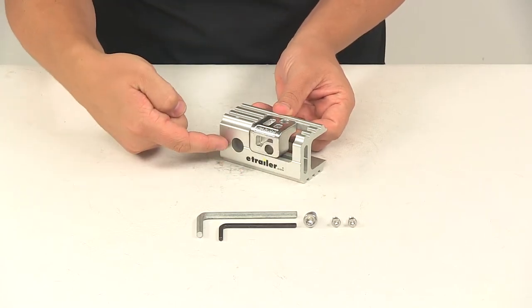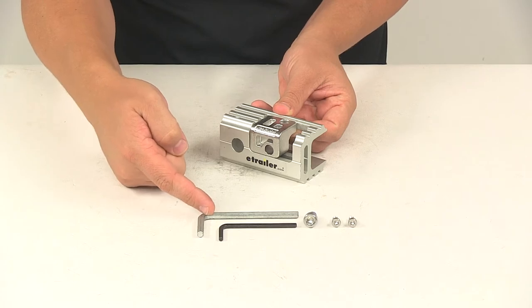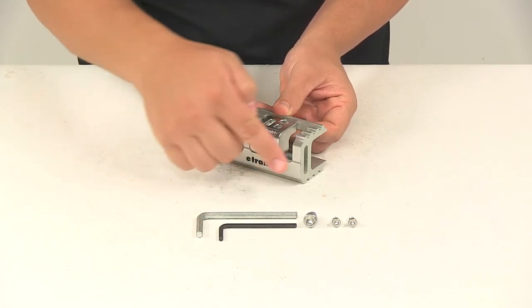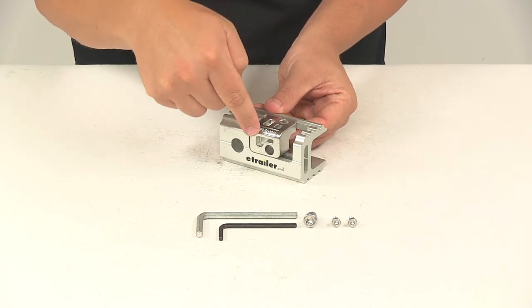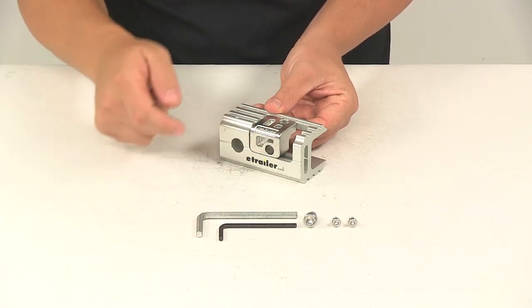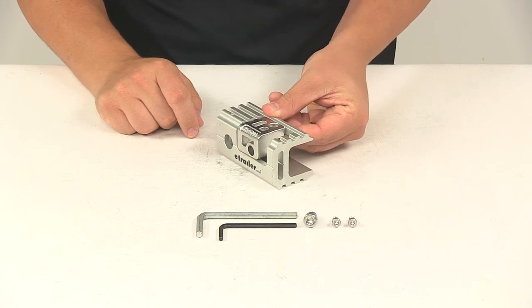The large bolt right here inserts into the large hole. You use the large hex wrench to get that installed. The two small ones, one installs here on the top. The other one installs right here on the side, and you use the smaller hex wrench to tighten everything down.